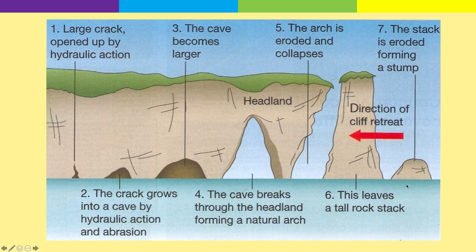Step six: this leaves what we call a stack — a big clump of rock separate from the headland. Step seven: the stack becomes smaller as continued wave action erodes it further, and it collapses to form a stump. To summarise: we start with a crack, which gets bigger into a cave; the cave erodes all the way through forming an arch; the arch roof collapses forming a stack; and then the stack is eroded and becomes smaller, forming a stump.